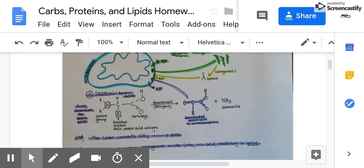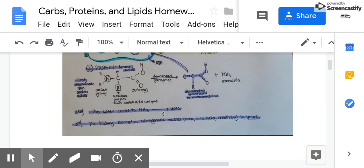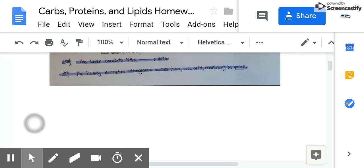So the liver then converts ammonia into a bigger nitrogenous molecule called urea. And the kidney - so then that goes back into the bloodstream. And then the kidney excretes these nitrogenous wastes such as urea, uric acid, and creatinine, which are all similar nitrogenous based compounds. And those get excreted in the urine. Okay, I'll stop there and go on to the next page.